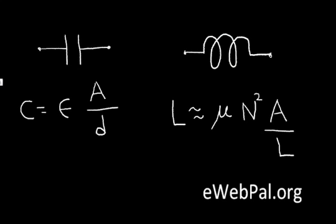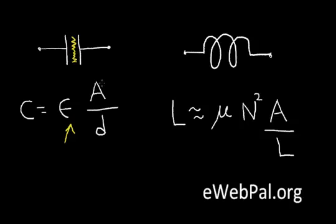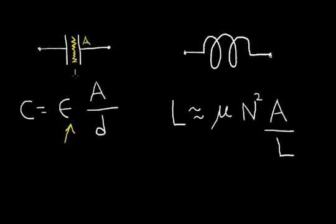In the previous video, 'What is an Inductor Part 1', I compared an inductor to a capacitor. Let's continue doing that. On the left side I have the equation for the capacitor that we talked about in a previous video; on the right side I have the approximate equation for a coil-wound inductor. For the capacitor, epsilon is a property of the material between the plates, A is the area of the plates, and D is the distance between the plates. A and D depend on the geometry of the capacitor, and epsilon depends on the material between the plates.